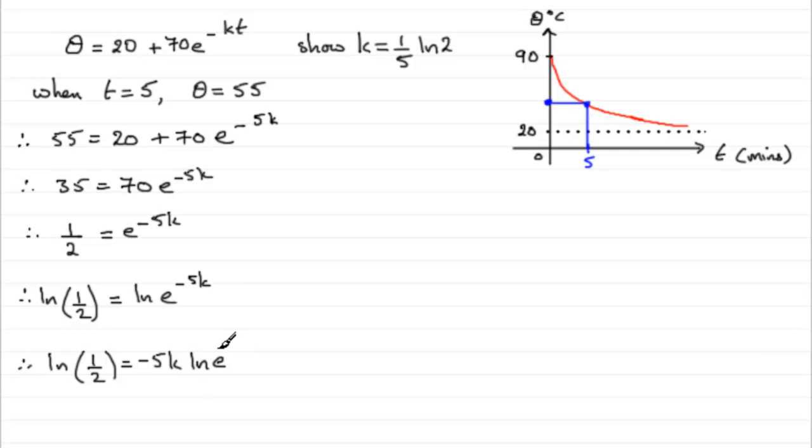And you should know that the natural log of e is 1. So we end up with, we'll come down here, we end up with minus 5k then equaling the natural log of a half. So minus 5k equals the natural log of a half.